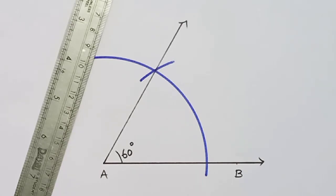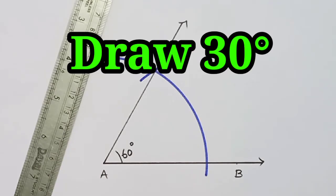How to bisect 60 degree angle or how to draw 30 degree angle.